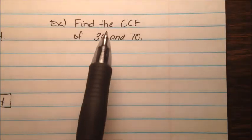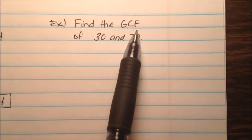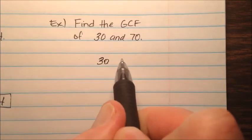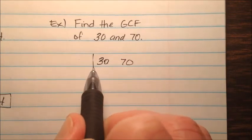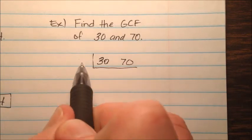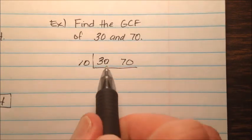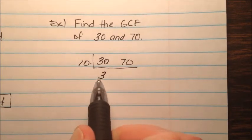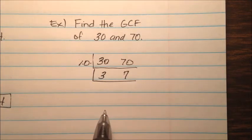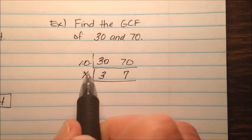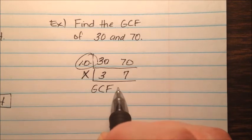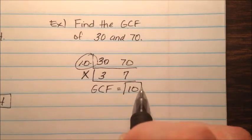In the next example, find the GCF, or greatest common factor, of 30 and 70. I'll write 30 and 70 right next to each other. I notice they both end in a 0, so I know I can pull a 10 out. 30 divided by 10 is 3, and 70 divided by 10 is 7. Is there anything that will divide both 3 and 7 evenly? Nope, so we're done. The greatest common factor is 10.